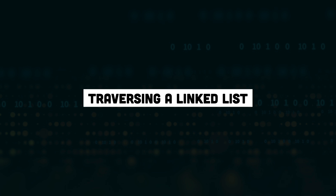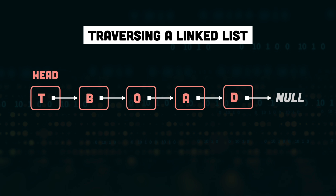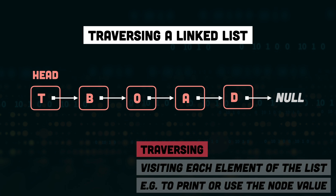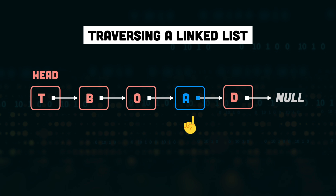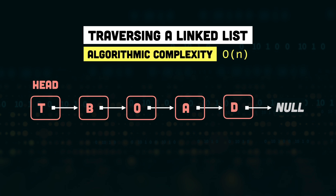Next we have traversal of the linked list, which is just visiting each node — for example, to print the value or perform some operation. To do that, we start with the head element, read the value, do the necessary processing, then read the address of the next node, visit it, read the value, read the next address, and keep repeating until the last node is reached. We know we've reached the last node when the next address value is null. The complexity of traversing the linked list is O(n).